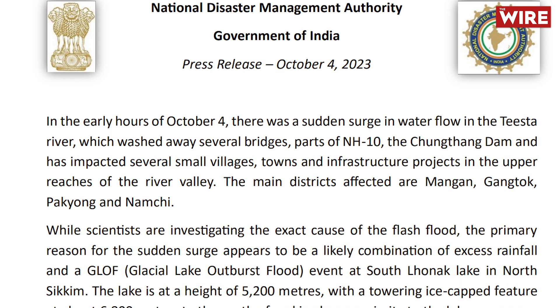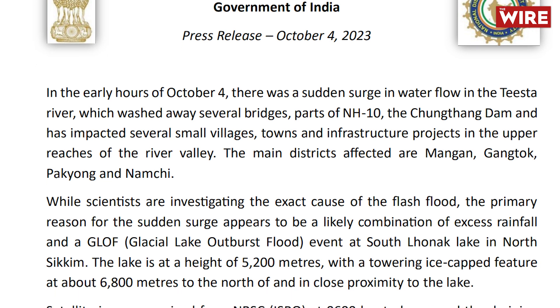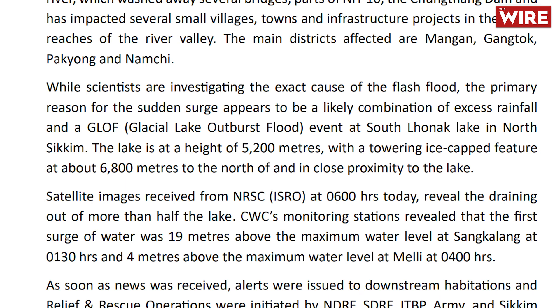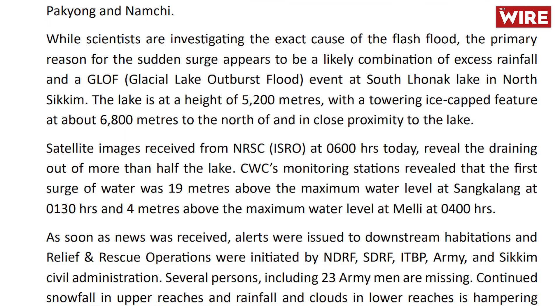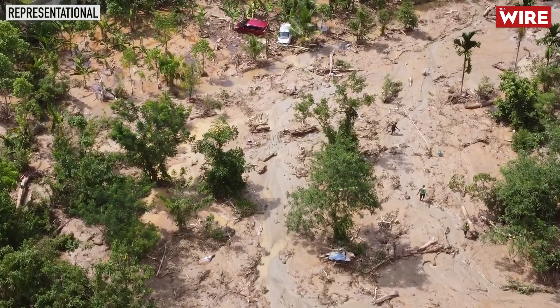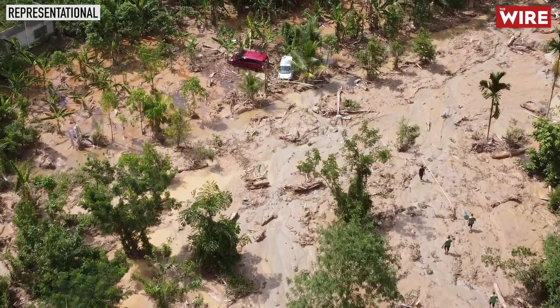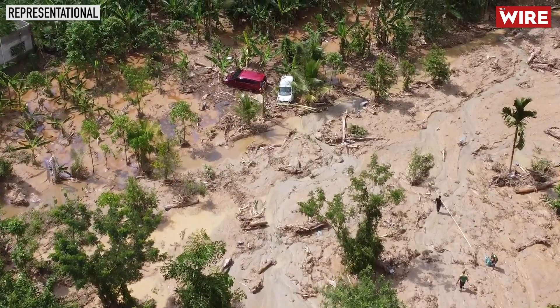According to a statement issued by the National Disaster Management Authority, the flash floods were the result of a cloudburst causing the Lonak Glacial Lake to overflow. The events were rapid and unpredictable. Army vehicles were swept away, 23 personnel were reported missing, and some vehicles were believed to be submerged under slush. GLOFs usually result in more damage and destruction than other kinds of floods caused by excess rainfall alone.